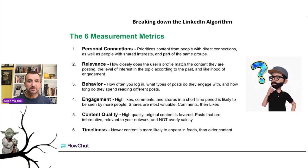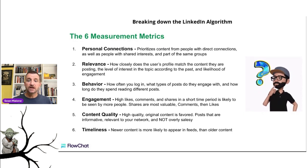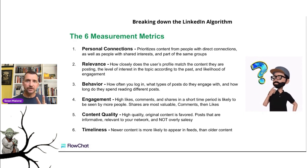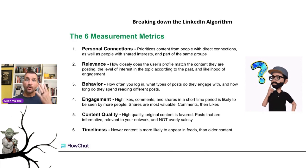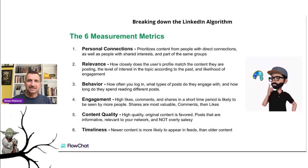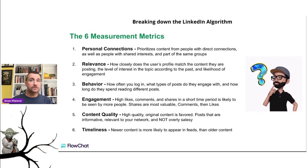Number six is timeliness. Newer content is more likely to appear in other people's news feeds than older content. So the six measurement metrics are: personal connection, relevance, behavior, engagement, content quality, and timeliness. Creating a consistent posting cadence is key — algorithms look for consistency, so make sure you're posting once, twice, or three times a week and doing that consistently.